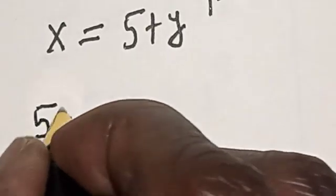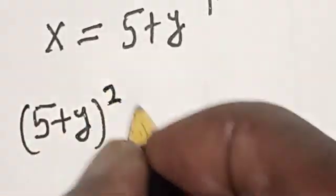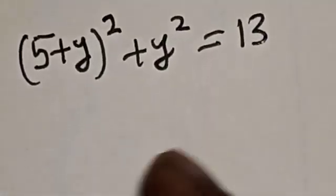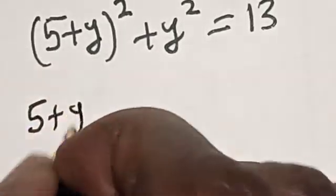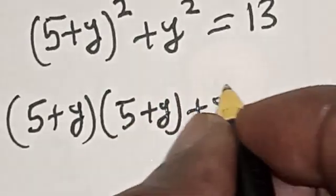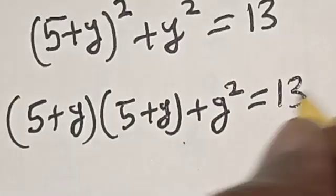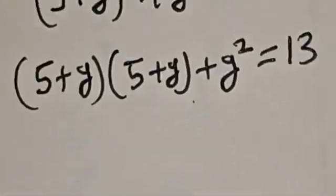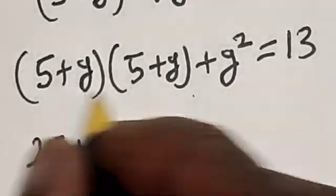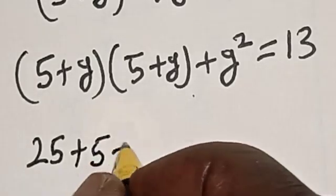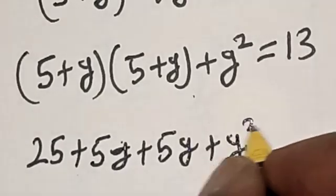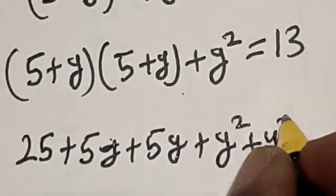From equation 2, now let's substitute for x in equation 1. So we have (5 plus y) squared plus y squared is equal to 13. Now this is (5 plus y) multiplied by (5 plus y).